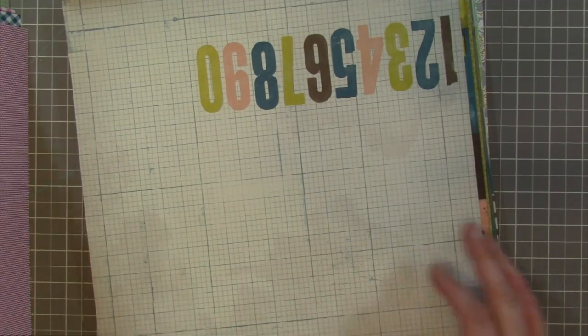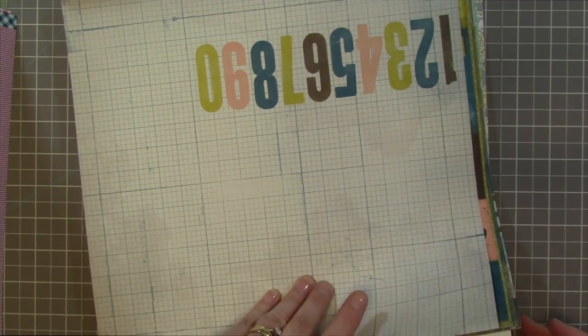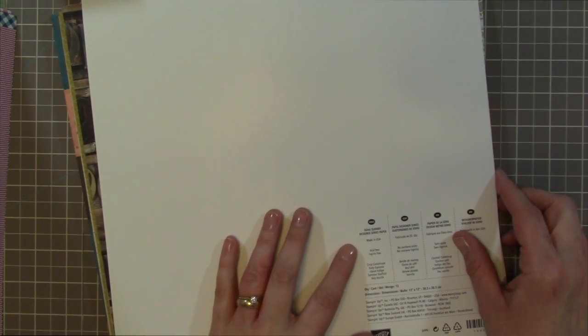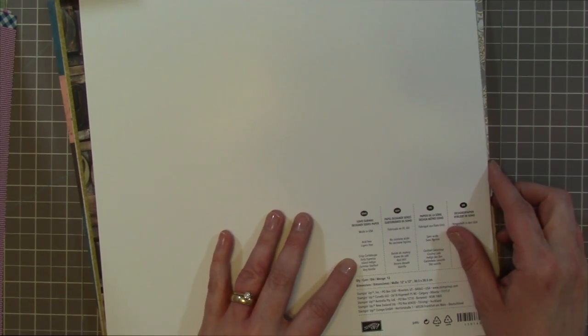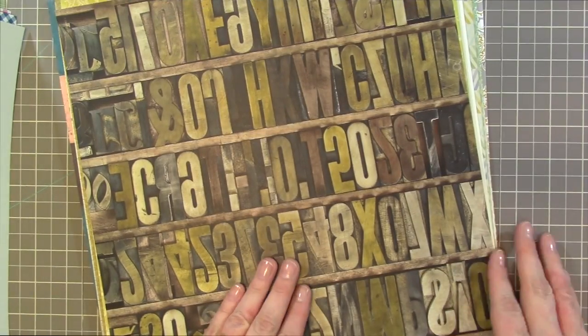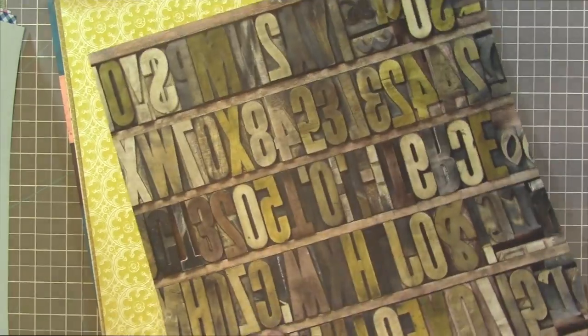Very pretty. This next one is Soho Subway. Soho Subway has Crisp Cantaloupe, Early Espresso, Island Indigo, Summer Starfruit, and Very Vanilla. Love this one. Very kind of grungy looking.